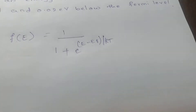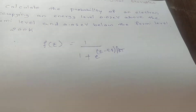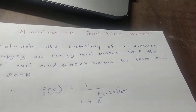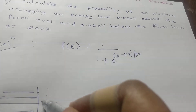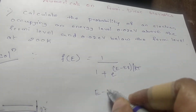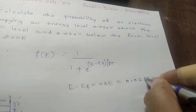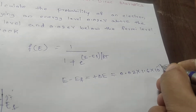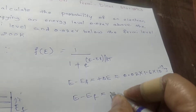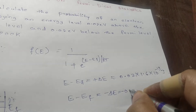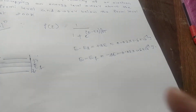We have two conditions: above the Fermi level and below the Fermi level. Above the Fermi level means E minus Ef will be positive delta E, so the value of E minus Ef is +0.02 electron volt, which equals 0.02 × 1.6 × 10^(-19) joules. Below the Fermi level, E minus Ef is negative delta E, so it equals -0.02 × 1.6 × 10^(-19) joules.